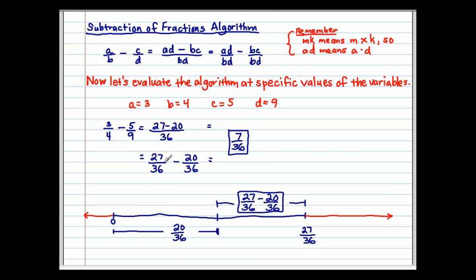I rewrote this problem for you on the bottom to see another way of looking at it, but they mean the same exact thing: 27 thirty-sixths minus 20 thirty-sixths equals 7 thirty-sixths. Now what does this look like on the number line? We're starting at 0, and the problem is telling us that we're starting at 27 thirty-sixths, and we are taking away 20 thirty-sixths.